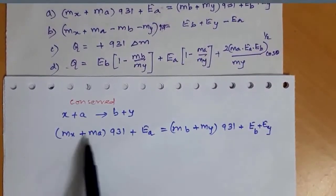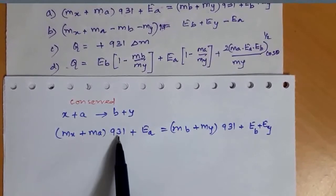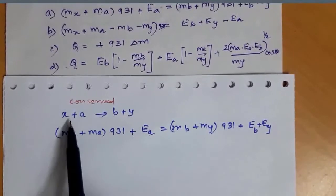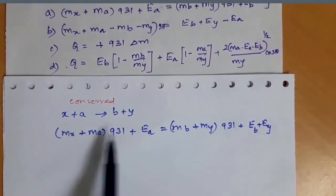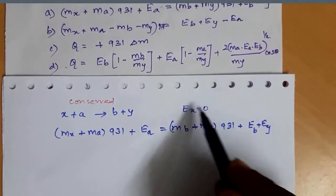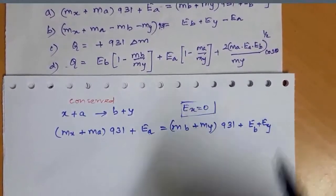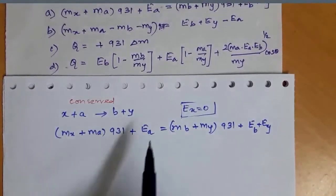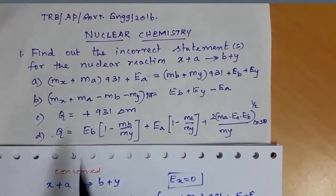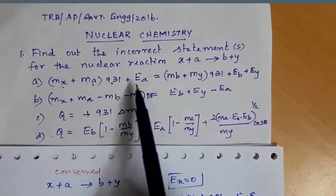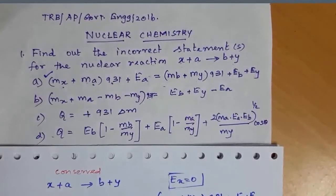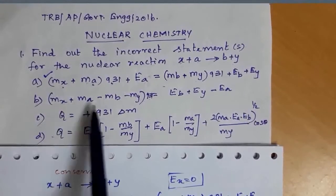On the right-hand side, X and A are the reactants; mass is converted to energy multiplied by 931. X is the target nucleus, so its kinetic energy EX equals zero — the target nucleus is at rest. Only the projectile energy EA is considered. So option A — mass of X plus mass of A multiplied by 931, plus EA — is the correct statement.